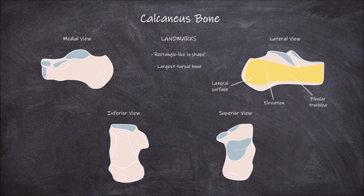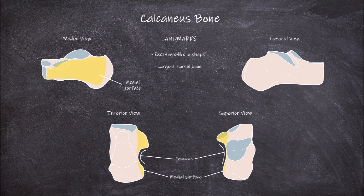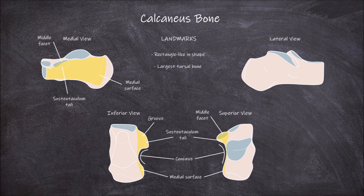The sixth and final surface is the medial surface. This surface is concave and has a large projection known as the sustentaculum telli. The superior surface of this projection has the middle facet, which has already been mentioned. The inferior surface of this projection has a groove on it.